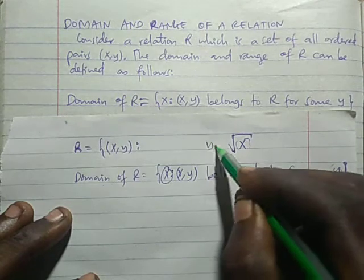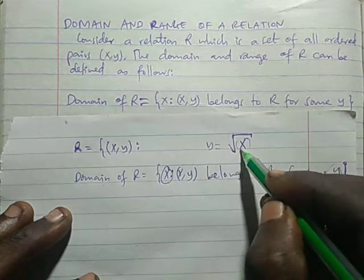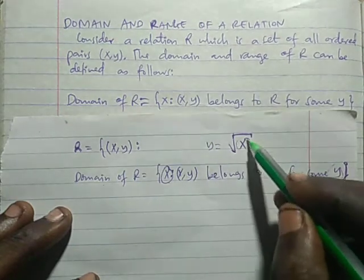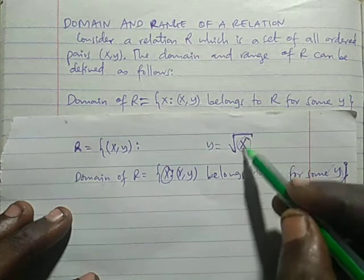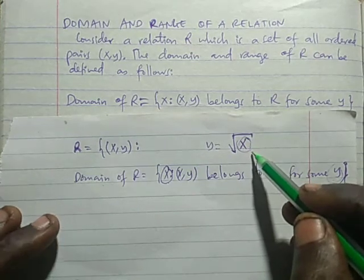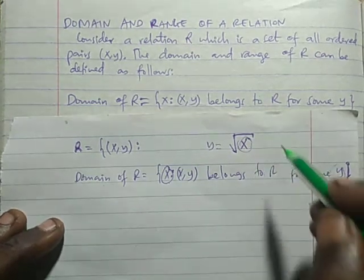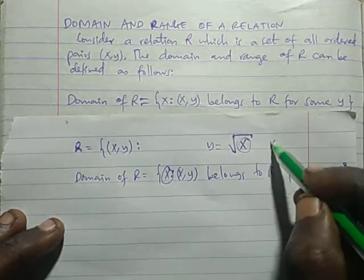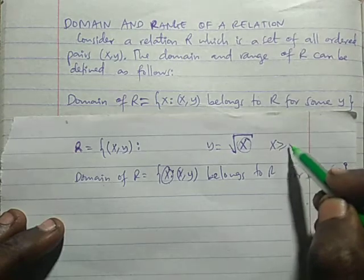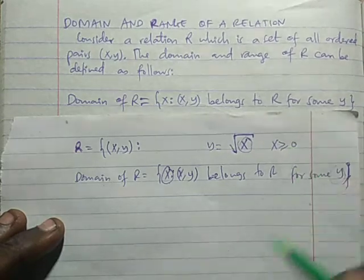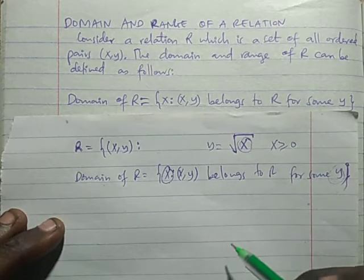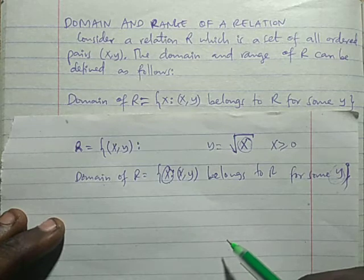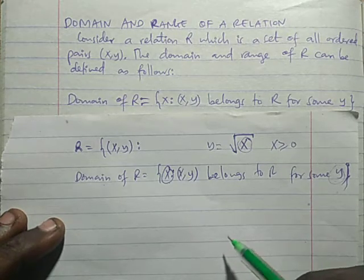For example, if Y is equal to the square root of X, the domain cannot include negative numbers because we don't have the square root of a negative number. So our domain will be only values of X greater than or equal to 0.